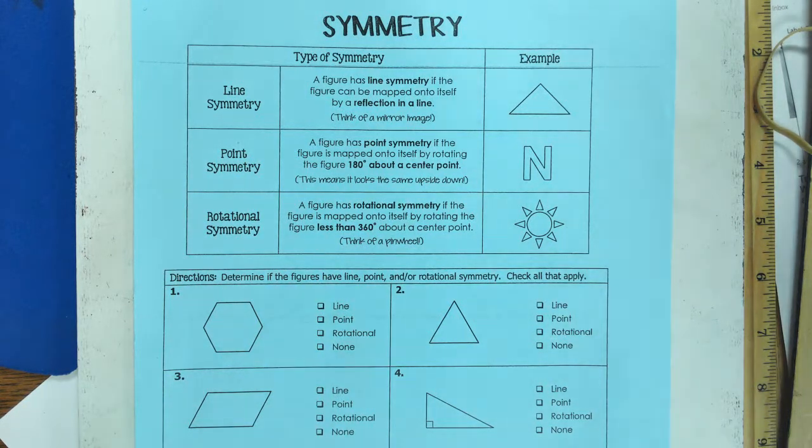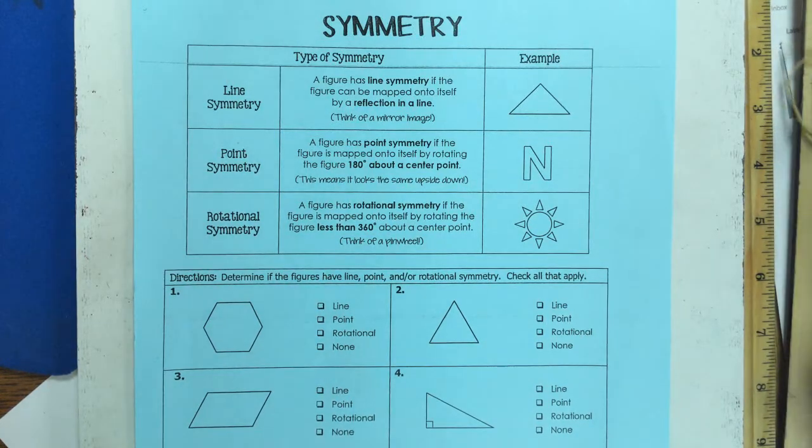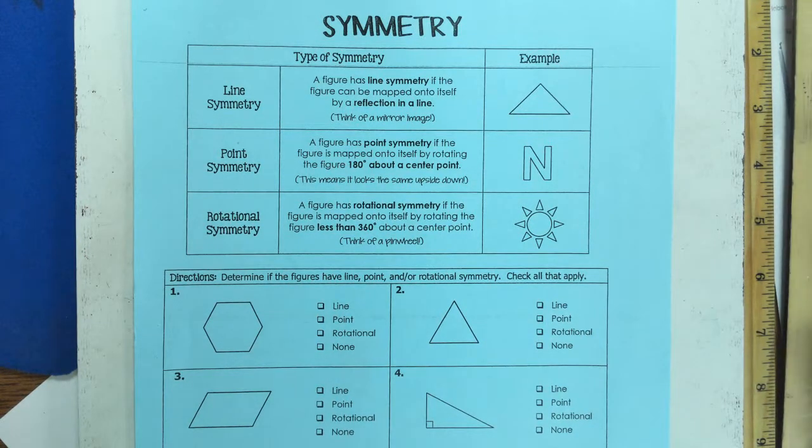Today we will talk about different types of symmetry. In geometry, when we talk about symmetry, a simple way of explaining it is how can I transform this figure so that it lands back on top of itself.